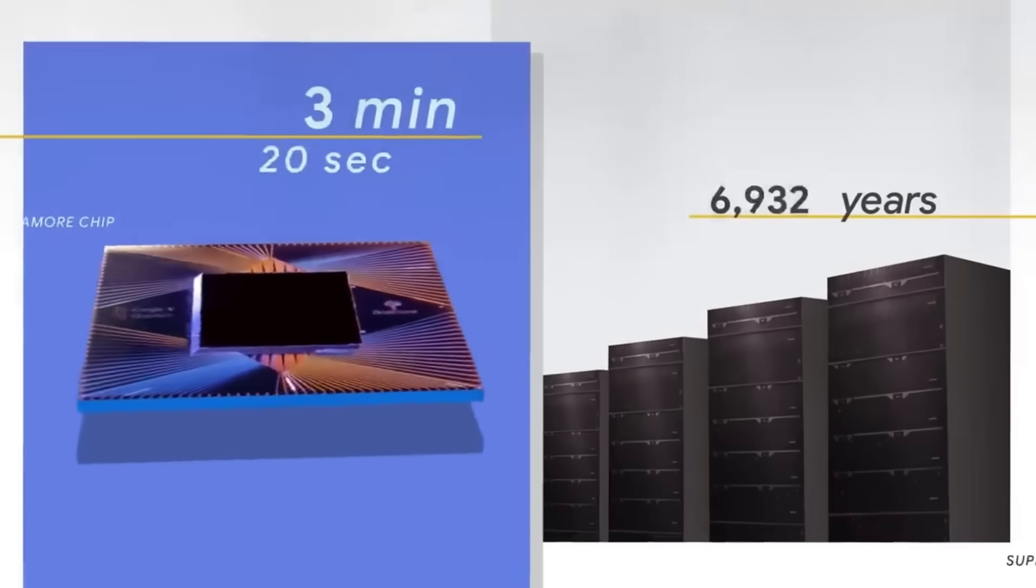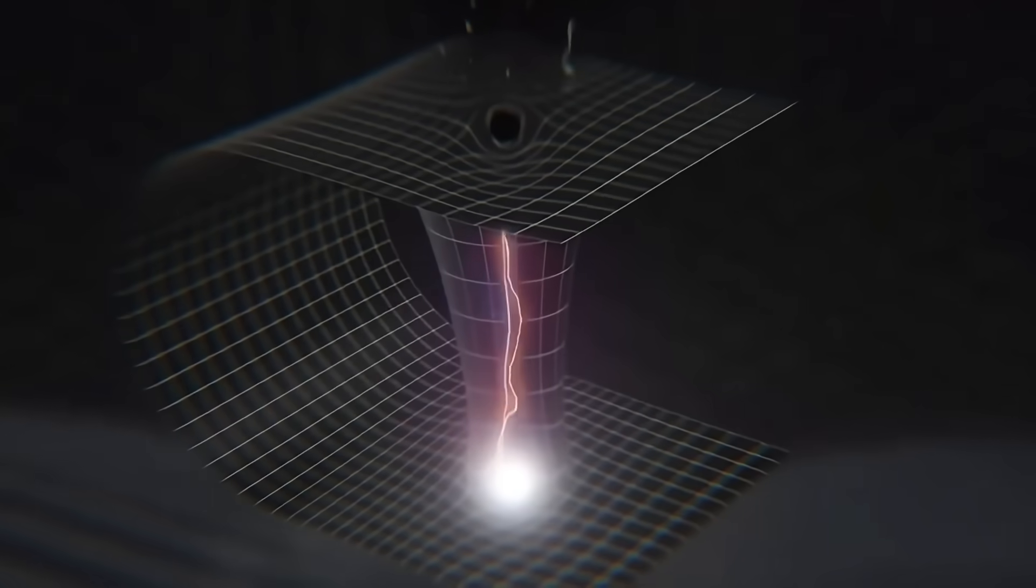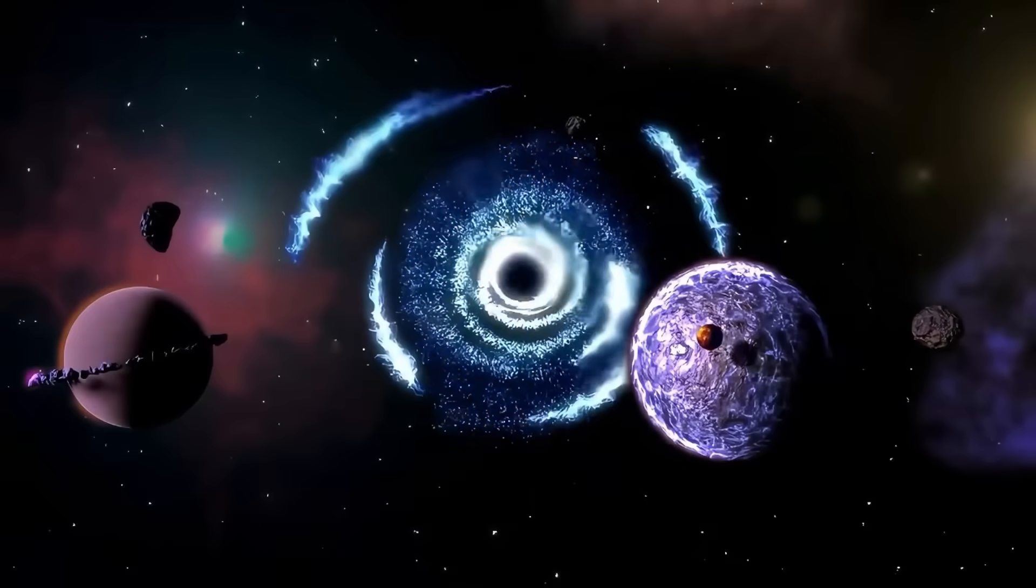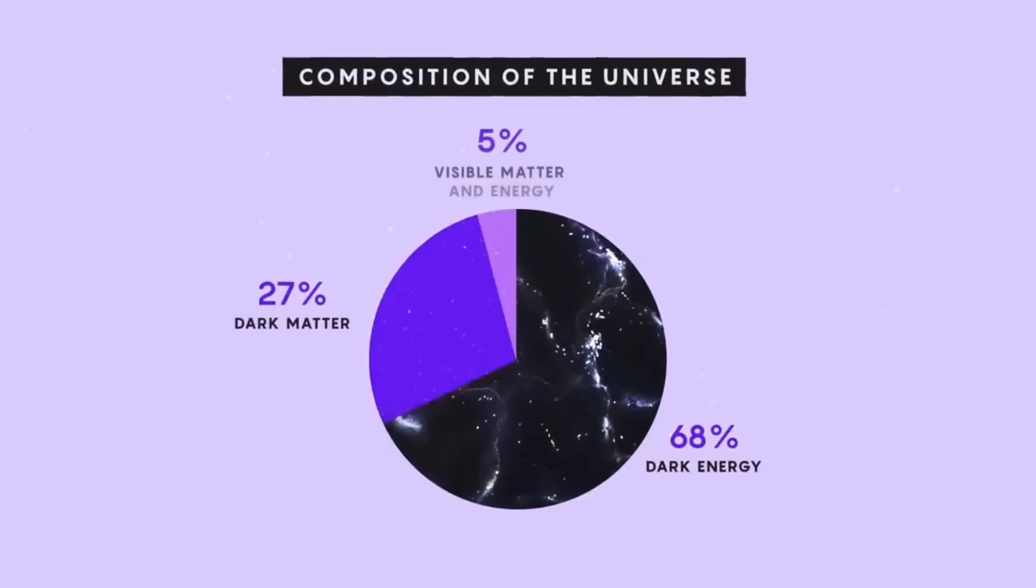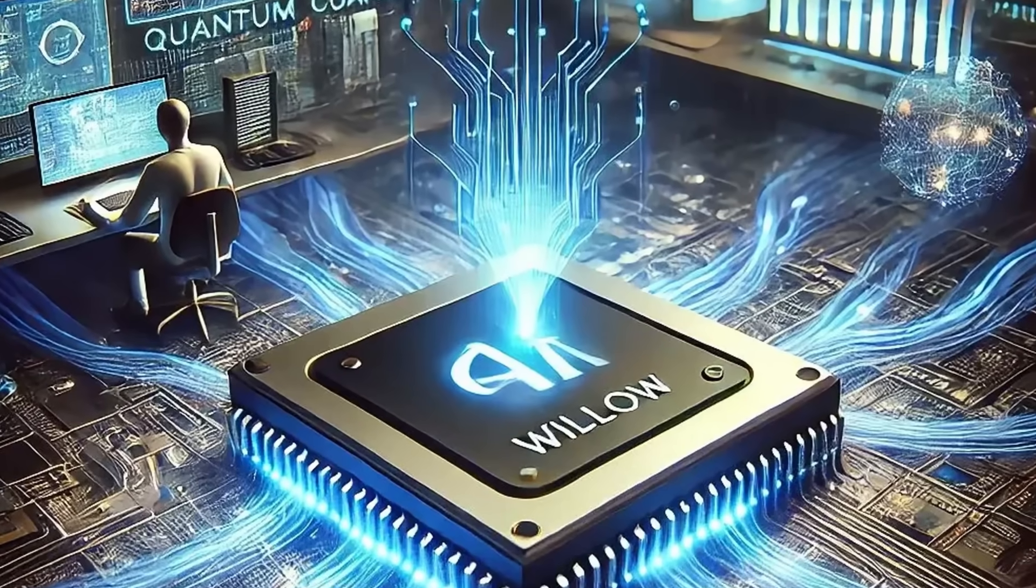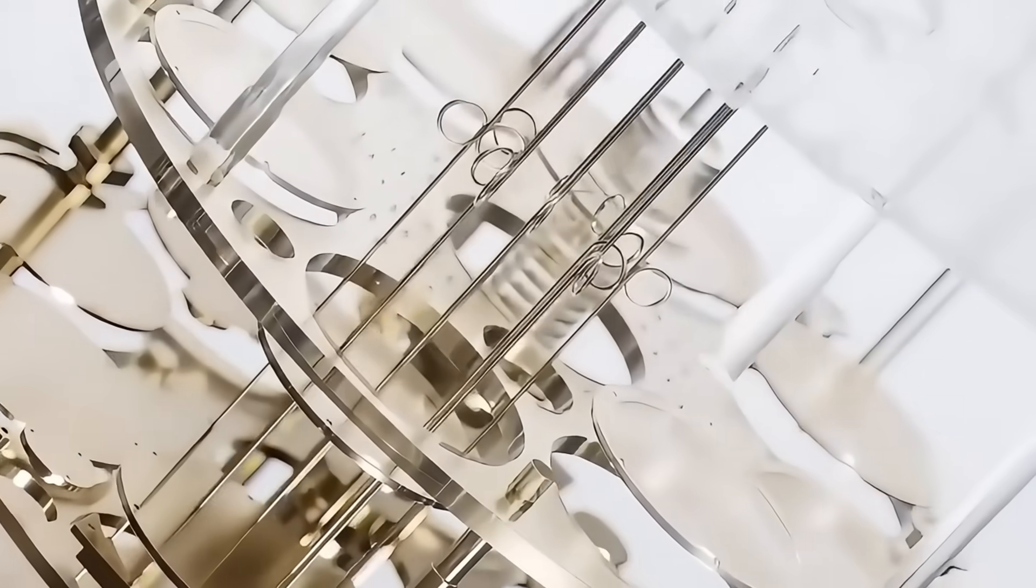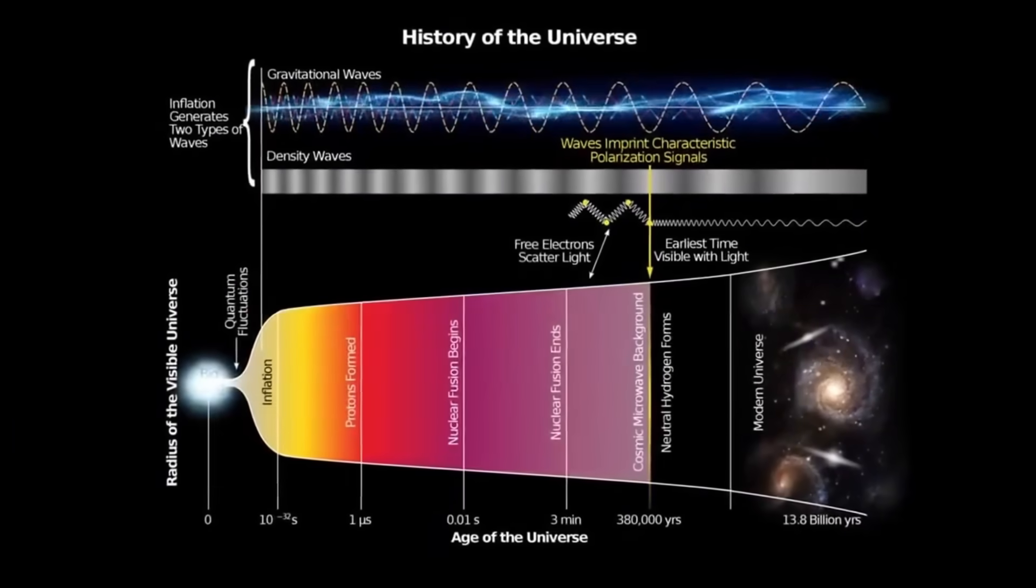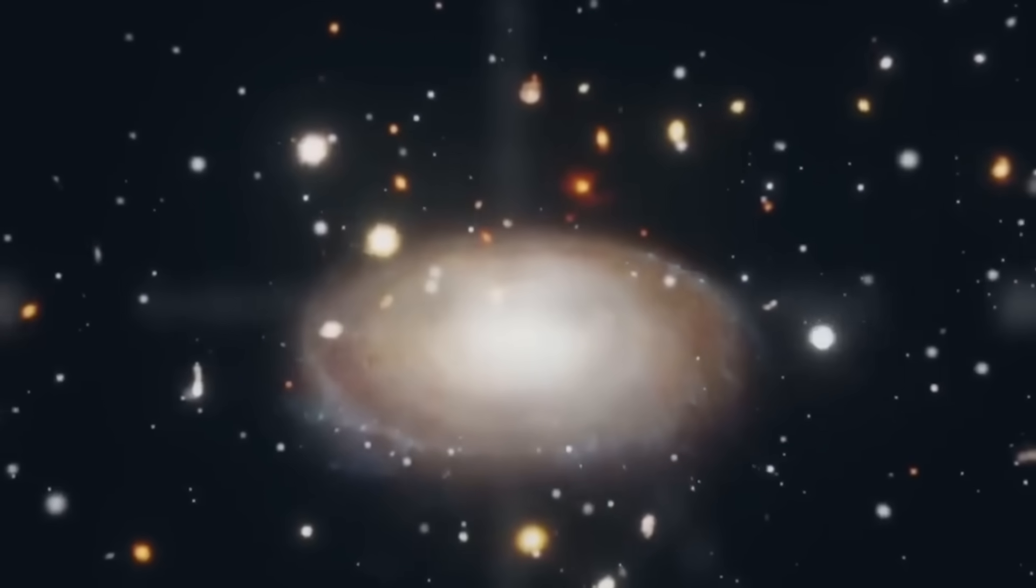Seth Lloyd of MIT has formalized how the cosmos functions as a quantum computer. That's an almost inconceivable amount of computation happening at every moment throughout the universe. Lloyd's work shows that simple quantum laws can generate all the complexity we observe in the cosmos when computed across vast scales. The universe continuously updates itself through these quantum operations.